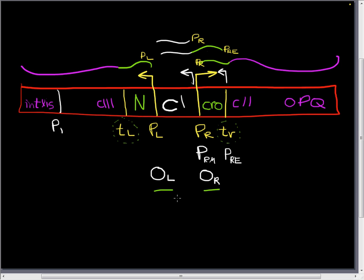But now, instead of activating transcription of PL and PRM, like lambda did, it's now going to inhibit those. So now we're going to have inhibition of PL and inhibition of PRM.